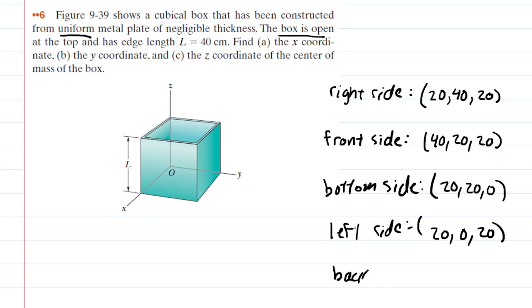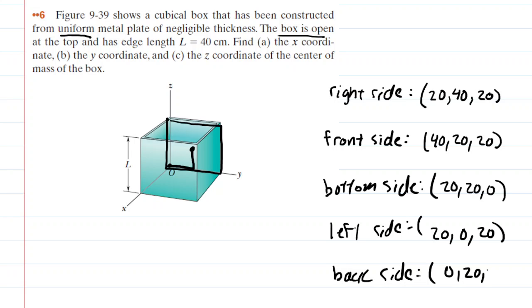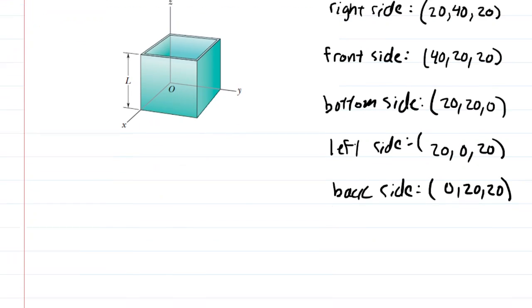Finally, we locate the center of mass of the back side. We outline it, mark the geometrical center, and find the coordinates. Starting at the origin, we move 0 units along the X-axis, 20 up the Y-axis, and another 20 up the Z-axis. So that's 0, 20, and 20. With these coordinates for all five sides, we can now find the center of mass of the entire box.